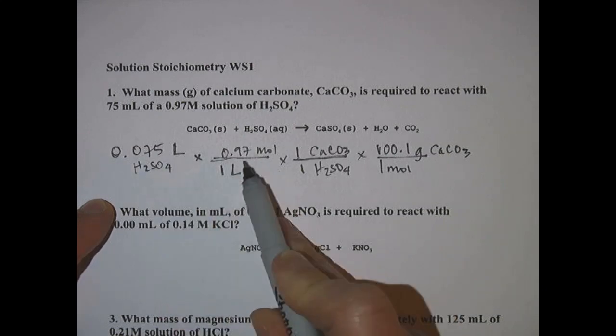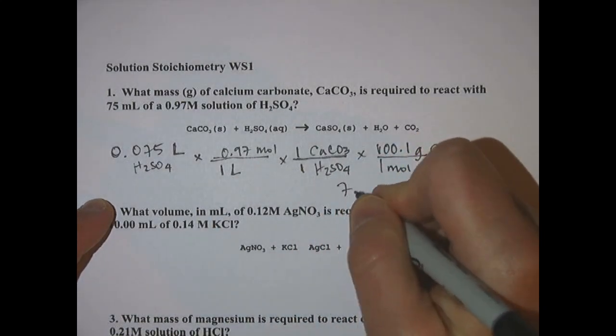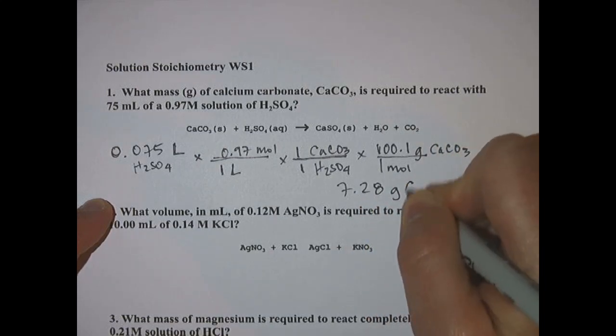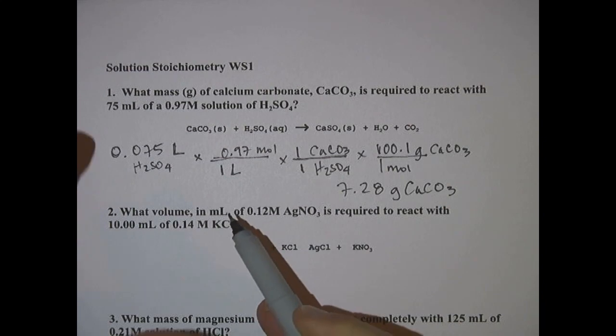So then you take 0.075 times 0.97 times 100.1, you end up with about 7.28 grams of CaCO3. So this problem was liters to grams.